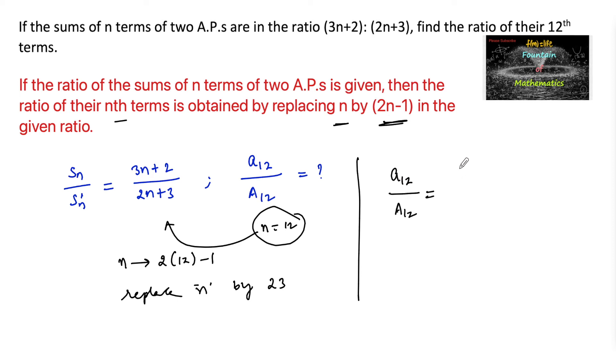Therefore, a12 upon A12 is equal to 3 times 23 plus 2 upon 2 times 23 plus 3, which is equal to (3×23=69, 69+2) upon (2×23=46, 46+3), so we have 71 upon 49. Therefore, the required ratio is equal to 71 is to 49.